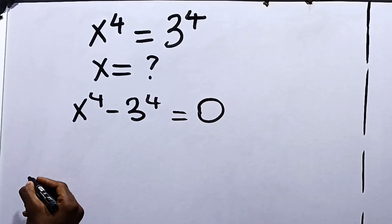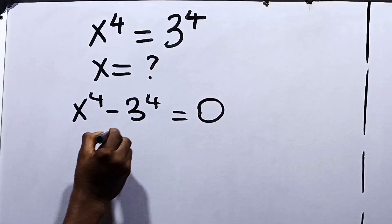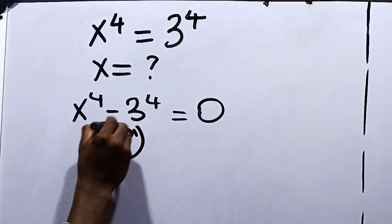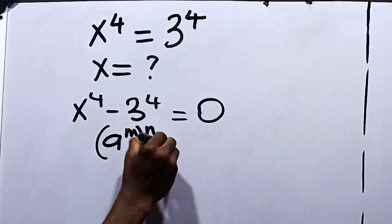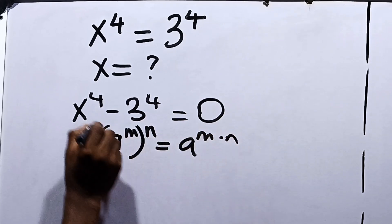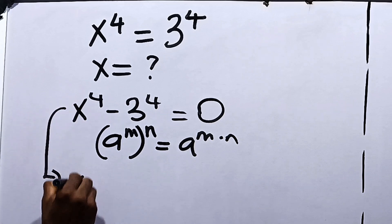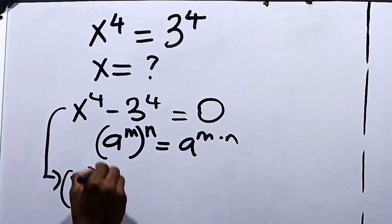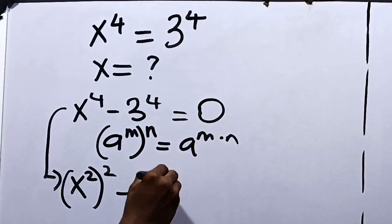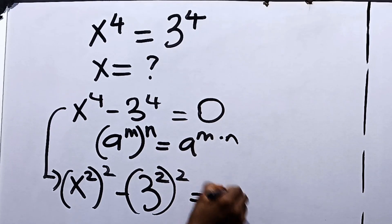From here, we recall the law of indices that says that a raised to the power of m, all raised to the power of n, is equal to a raised to the power of m multiplied by n. So from here, we can change this to x raised to the power of 2 squared minus 3 raised to the power of 2 squared, equal to 0.